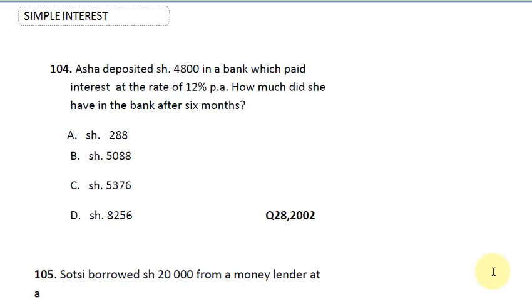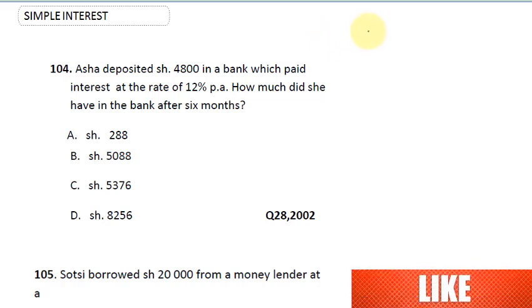In this set of questions we are going to be discussing several simple interest questions you are going to be encountering in your exams. This question here says: Asha deposited 4,800 shillings in the bank which paid interest at the rate of 12% per annum. How much did Asha have in the bank after six months? Before I solve this question, I'm going to give you a brief review on simple interest.